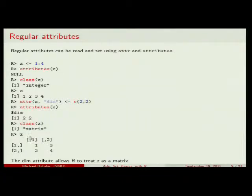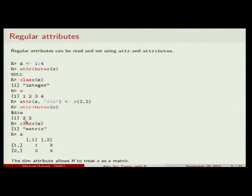Even if I look at it, it no longer displays as 1, 2, 3, 4 — it now looks like a matrix. The reason is that whenever an object in R has a dimension attribute, it's at least a matrix. If it's two-dimensional with rows and columns, it's a matrix. If it has more dimensions, it's a general array with k dimensions.